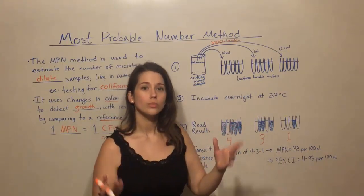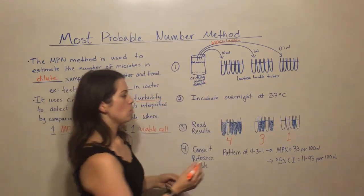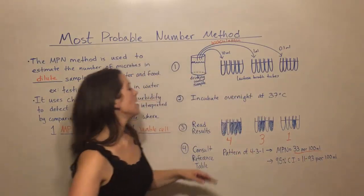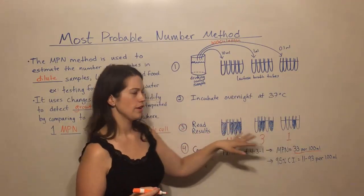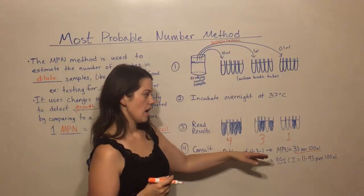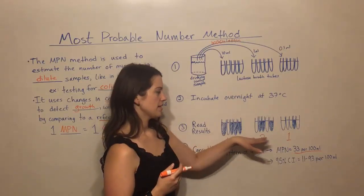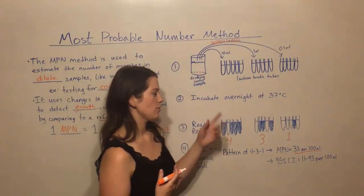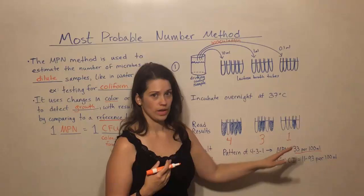And this tells you that if you see the 4-3-1 pattern, the MPN, the most probable number of coliforms in the original sample was 33 per 100 mils. Now if we had gotten different patterns up here, if it had been 4-4-1 or if it had been 5-2-1, different patterns will result in a different most probable number. But with this pattern of 4-3-1, the best answer statistically is that for every 100 milliliters of that sample, we have 33 coliform bacteria.